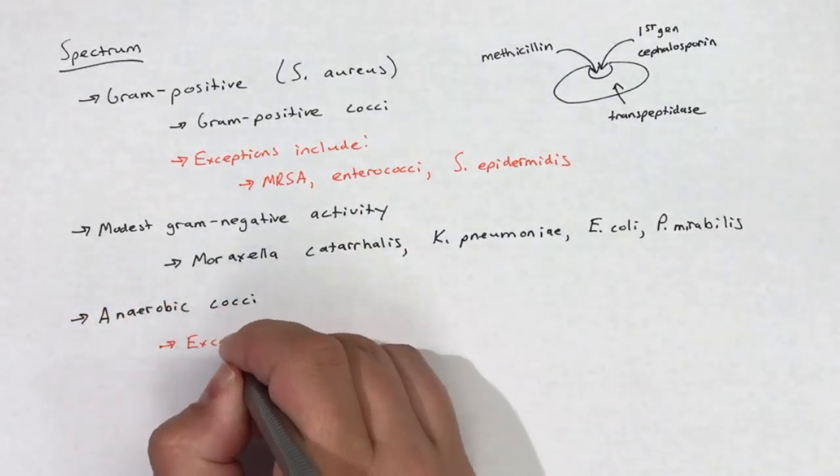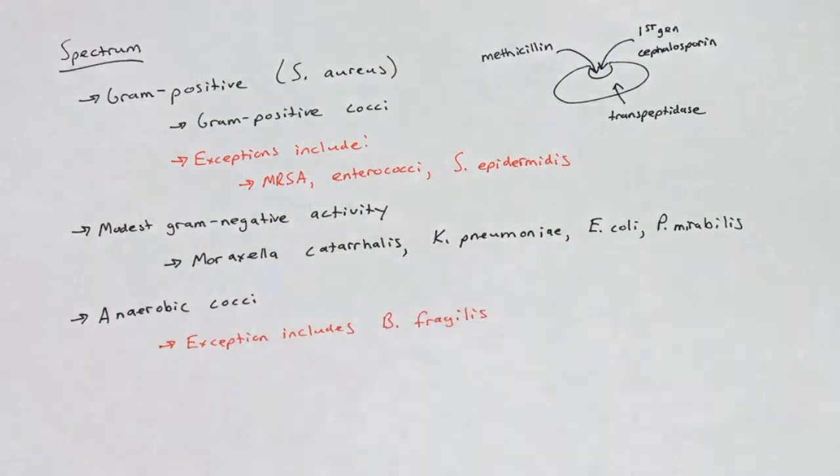First-generation cephalosporins also provide good coverage of anaerobic cocci, with the exception of B. fragilis.